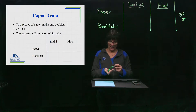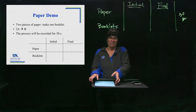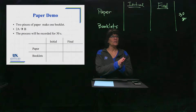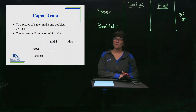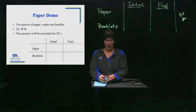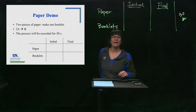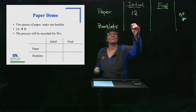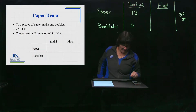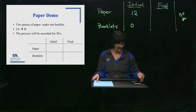Here's what's going to happen: I am going to take my stack of paper, take two pieces, fold them together, and make one booklet. So two pieces of paper turns into one booklet — that's the reaction 2A → B. I have started with 12 pieces of paper and no booklets. Let's see how many booklets we can make in 30 seconds.